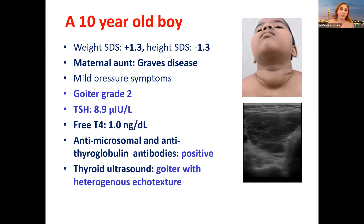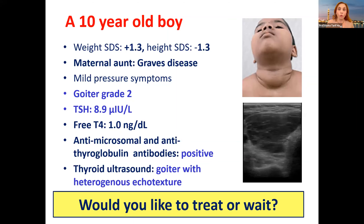Now this is a ten-year-old boy who came with weight in the high normal and height in the low normal. His maternal aunt has Graves' disease, he has mild pressure symptoms, goiter grade 2, TSH approaching 9, normal T4, positive antibodies, and ultrasound showing goiter with heterogeneous echo texture. Shall we treat or wait?